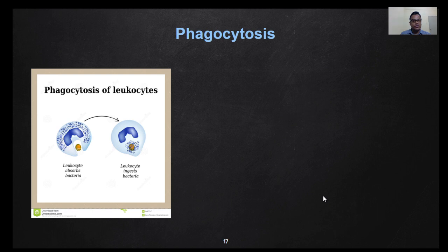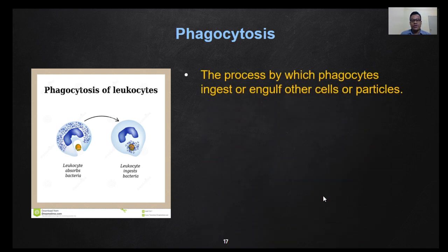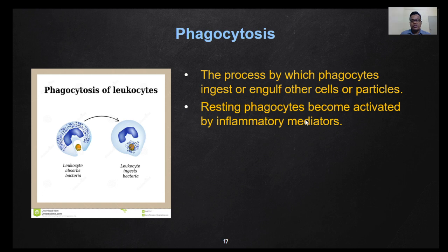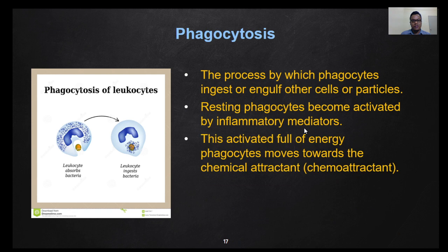Phagocytes perform phagocytosis, which is the process by which phagocytes ingest or engulf other cells or particles. Resting phagocytes become activated by inflammatory mediators, which include pathogens, chemicals, toxins, or cell injury. These activated macrophages, full of energy, may move towards chemical attractants released by the inflammatory mediators. This chemical attractant is called a chemoattractant, and the process of moving towards it is called chemotaxis.